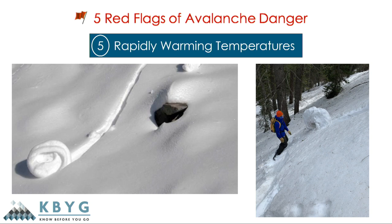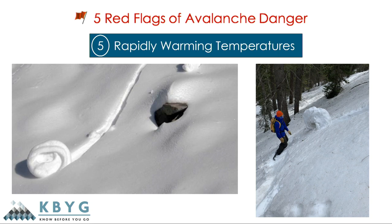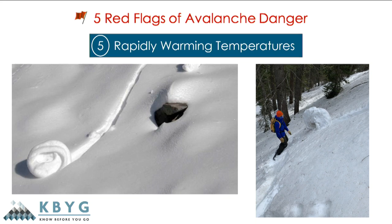Number five: rapidly warming temperatures. We're almost in full springtime mode here in Utah and seeing the days get warmer. That can cause instabilities in the snow. Some indications it's getting too hot are cinnamon rolls, pinwheels, or roller balls rolling down on you in the mountains — if you start seeing them, it's time to turn around or head to shadier, more protected slopes. Wet avalanches are really tricky to predict and forecast for, but luckily we get some clues that indicate when they might occur.